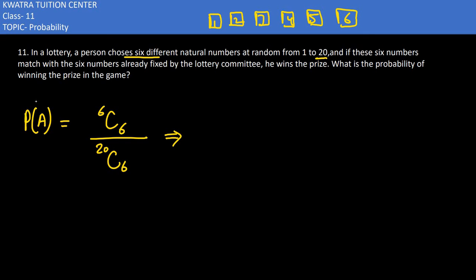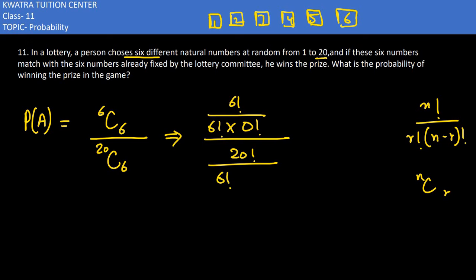The formula for combination is N factorial divided by R factorial times N minus R factorial. N is our top term and R is our bottom term. For 6C6, we have 6 factorial over 6 factorial times 0 factorial. For 20C6, we have 20 factorial over 6 factorial times 14 factorial.